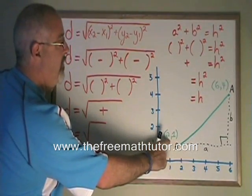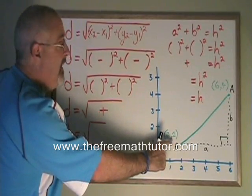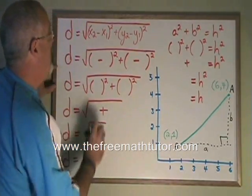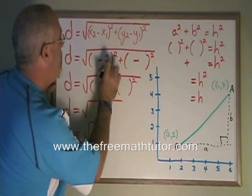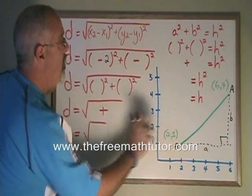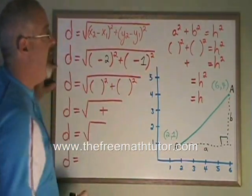If we call point B the first point, then our x1 is 2, and x1 is here, I put a 2. Our y1 is 1, put a 1 there.